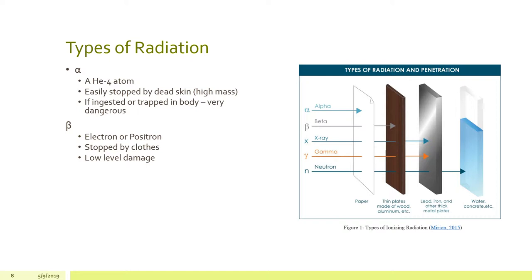Beta, or electron or positron radiation, can be stopped by clothes and has a relatively lower damage.